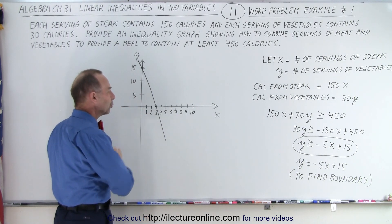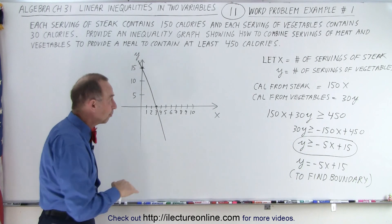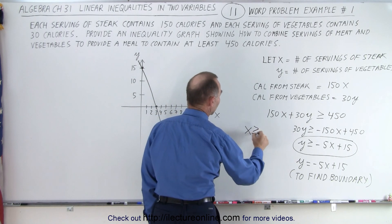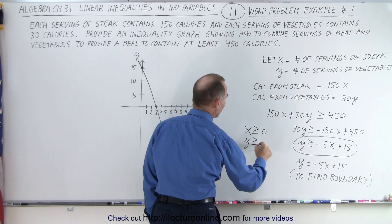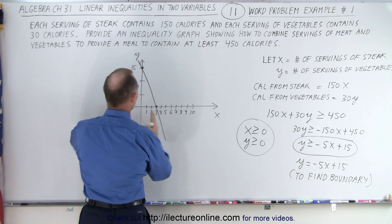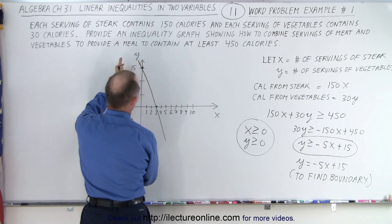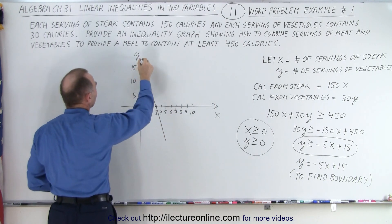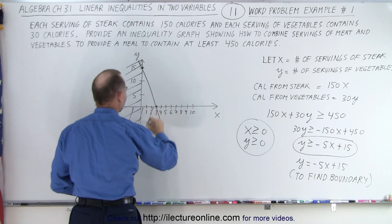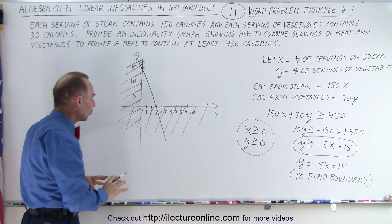Which region is a valid region and which region is not? You can't have negative portions of steak and you can't have negative portions of vegetables. We want x to be greater than or equal to 0, we want y to be greater than or equal to 0, simply because you can't have negative portions. This means it has to be everything above the x-axis and everything to the right of the y-axis, which means we can get rid of anything to the left of the y-axis and anything below the x-axis. By crossing out what we don't want, it makes it easier to find the region that we do want.